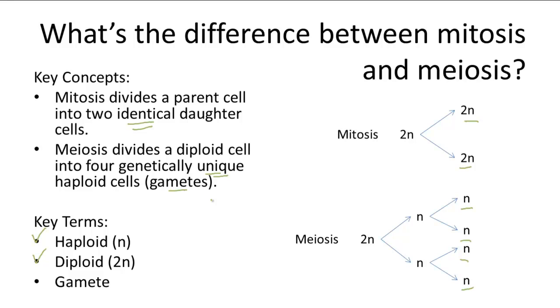Unique haploids have an evolutionary advantage by making the gene combinations within gametes more diverse. And that's why meiosis creates genetically unique haploid cells.